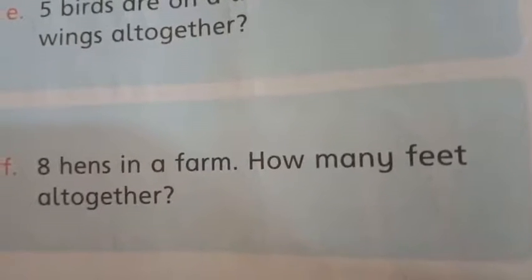Three girls have two sweets each — how many sweets altogether? Three twos are six. Question E: five birds on a tree — how many wings altogether? Each bird has two wings, five twos are ten. Eight hens on a farm — how many feet altogether? Each hen has two feet, eight twos are sixteen.